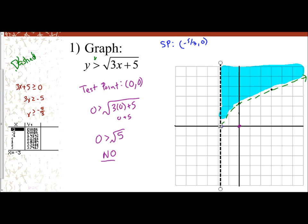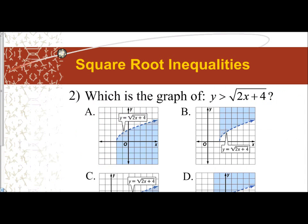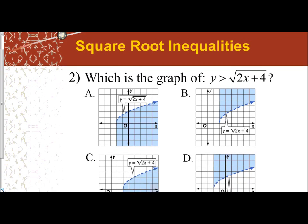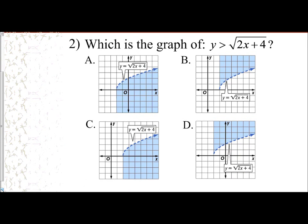Let's see some examples in a standardized test problem. Which is the graph of y is greater than square root of 2x plus 4? Well, first thing that comes to mind is, are all of my choices dashed lines because of my inequality symbol? And yes, they are. Next thing that comes to my mind is, can I figure out what my starting point is? Well, since my x has a coefficient, I can't use the AHK technique of transformations.